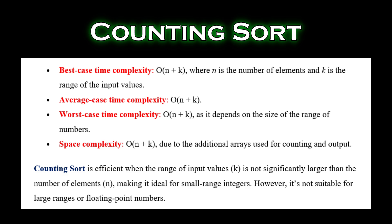Space complexity is O(n + k) due to the additional arrays used for counting and output. Counting Sort is efficient when the range of input values k is not significantly larger than the number of elements n, making it ideal for small range integers. However, it's not suitable for large ranges or floating point numbers.